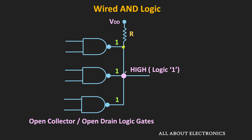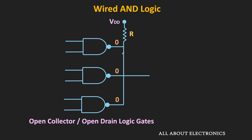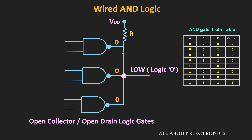But if any one of the outputs is 0, then the overall wired output will also become 0. For example, if the output of the first NAND gate is logic 0 and the outputs of the other two gates are logic 1, then the voltage at this node will be close to 0V. The entire current will flow through that logic gate, pulling down the voltage of the other two logic gates. So whenever any one output is 0, the overall output becomes 0, and only when all outputs are 1 does the wired output become 1 — acting as an AND gate.